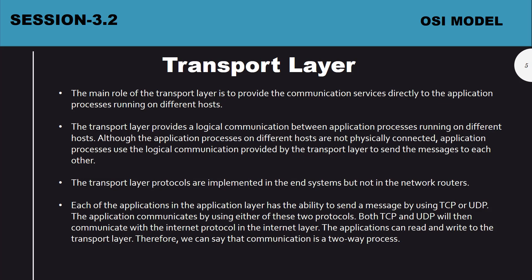Anyone learning networking will surely hear about TCP and UDP. Phone calls use UDP — User Datagram Protocol — while the internet mostly uses TCP — Transmission Control Protocol. For example, if you open Facebook in your browser, your browser is an application on your host and your friend's browser is an application on his host. The transport layer provides communication service directly between these application processes, giving a logical communication between applications running on different hosts.